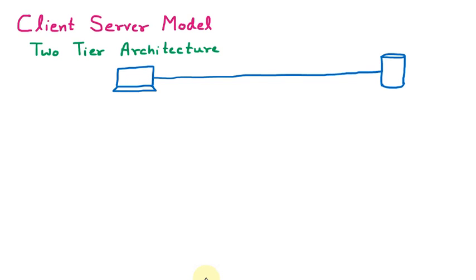We are discussing the client-server model in .NET. We are dealing with web applications where we have the client and the server. For example, if I open facebook.com, a request goes to the server and the server replies with the Facebook page. That is the client-server model.